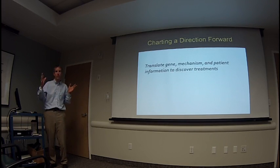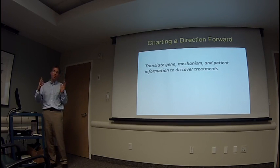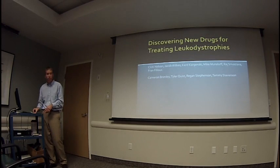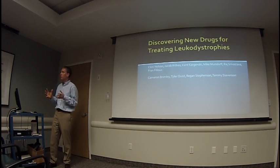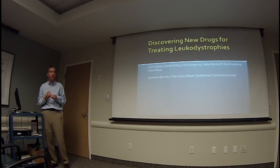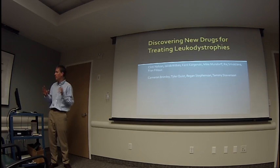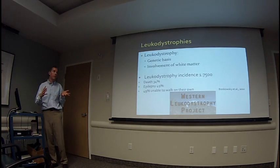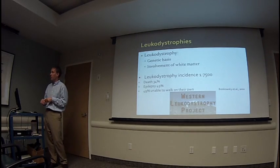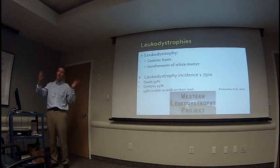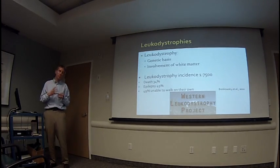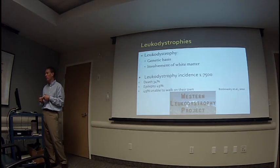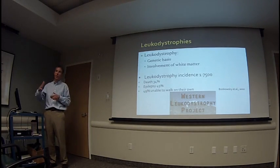What I'd like to talk about today is how we combine basic science understanding of mechanisms with our clinical understanding of patients to identify new therapies. The first project involves finding new drugs to treat leukodystrophies. Leukodystrophies are genetically determined diseases of the white matter. From work with our own group here in Utah, we were the first to find out the actual incidence: about one in 7,000 children will develop a leukodystrophy. Of those, the complication rates are very high — about a third of children will die by the time they're eight years old, about half will develop epilepsy, and about half can never learn to walk.